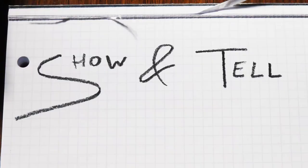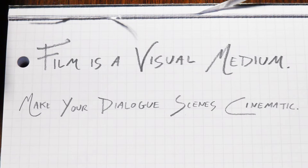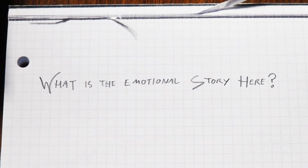Film is a visual medium, but have you ever written a dialogue scene only to realise nothing visual is going on? Here's an exercise to make your dialogue scenes cinematic. Take your scene and ask yourself: what is the emotional story here? It could be a shift in power between two people, a newfound respect, a dying romance. Write that scene again from scratch as a silent movie.